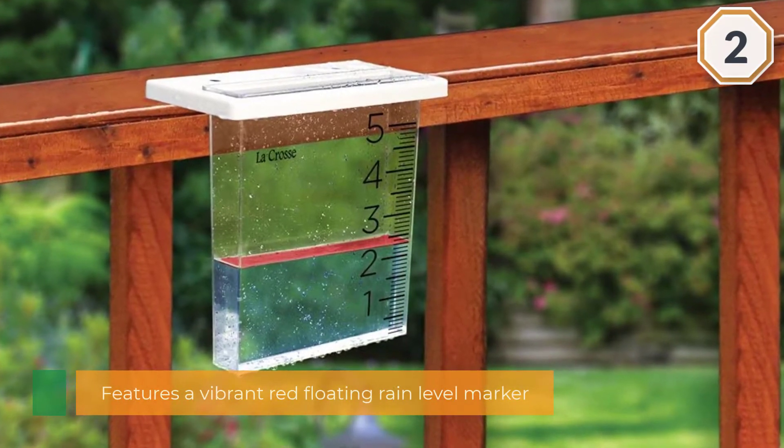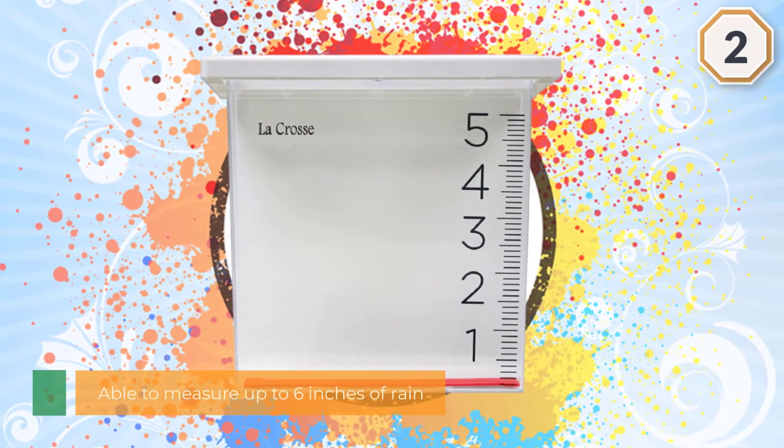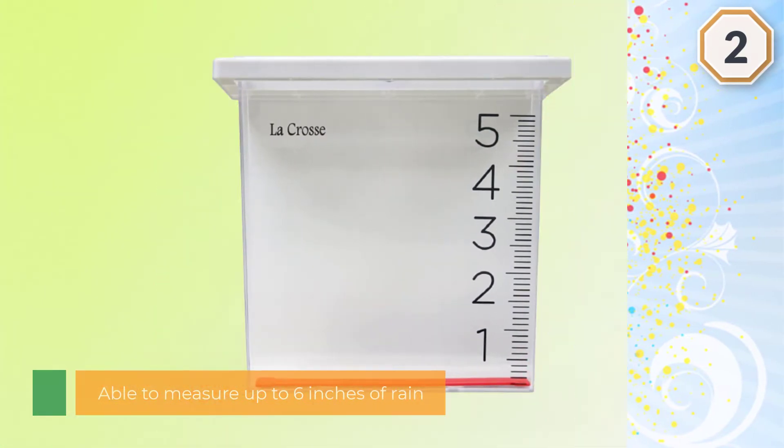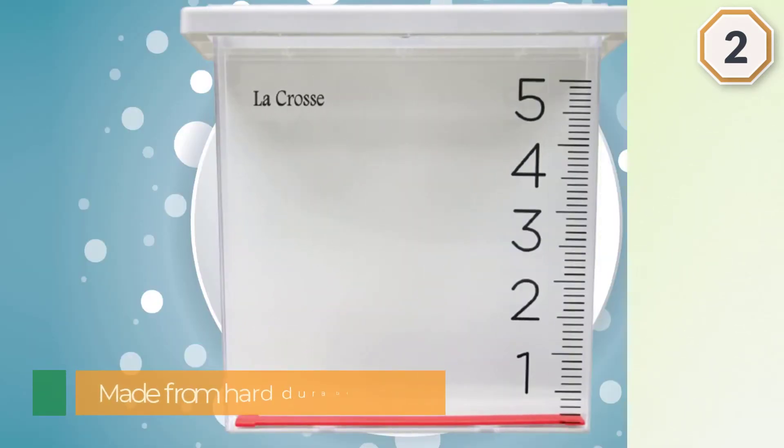It features a vibrant red floating rain level marker which makes accurate reading possible even when you are far from the instrument. It is also able to measure up to 6 inches of rain. This gadget is made from hard durable glass and this makes it withstand tough weather conditions and last long.